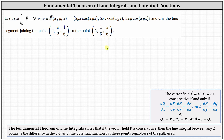We begin by determining if the given vector field is conservative. Because we have a three-dimensional vector field, if we let the components be p, q, and r, the vector field is conservative if and only if the partial of q with respect to x equals the partial of p with respect to y, the partial of r with respect to x equals the partial of p with respect to z, and the partial of r with respect to y equals the partial of q with respect to z.